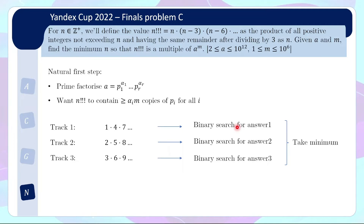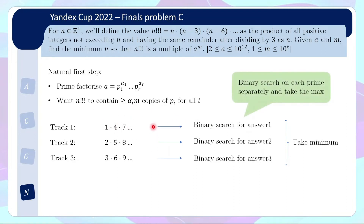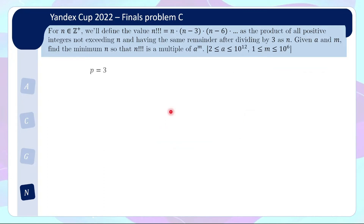Rather than doing a binary search across all primes simultaneously, which makes it very difficult, the way to do the binary search is to binary search on each prime separately. For example, you consider p1 first and binary search for the minimum value of n that contains sufficiently many copies of p1. Then you binary search on p2 as well. Eventually you take the max among all the requirements for each track separately. Let's talk about how we do this binary search in detail — the details can be a bit intimidating.